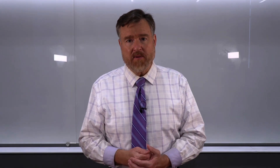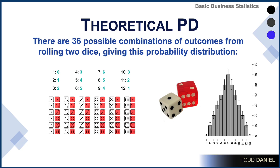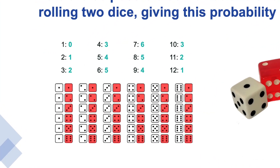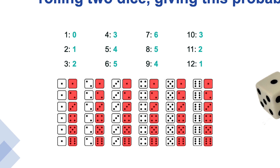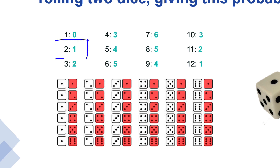Let's start by examining the theoretical probability distribution. Given the example of rolling two dice — one red and one white — we can come up with the 36 possible combinations of outcomes that can occur, which gives us a probability distribution. For instance, with two dice, there is no way to get a score of one. However, there is one way that we could get a score of two, in that both dice show a one.